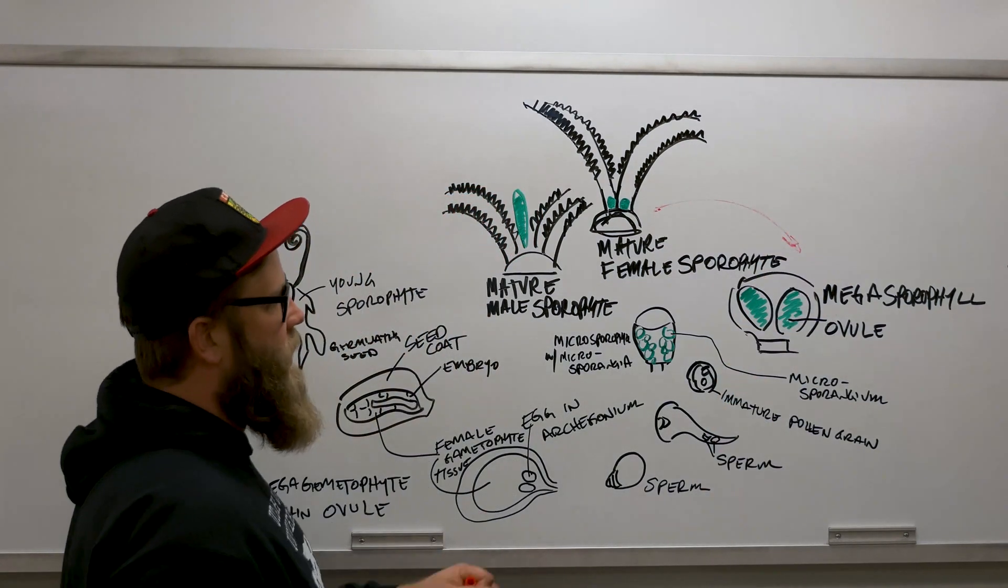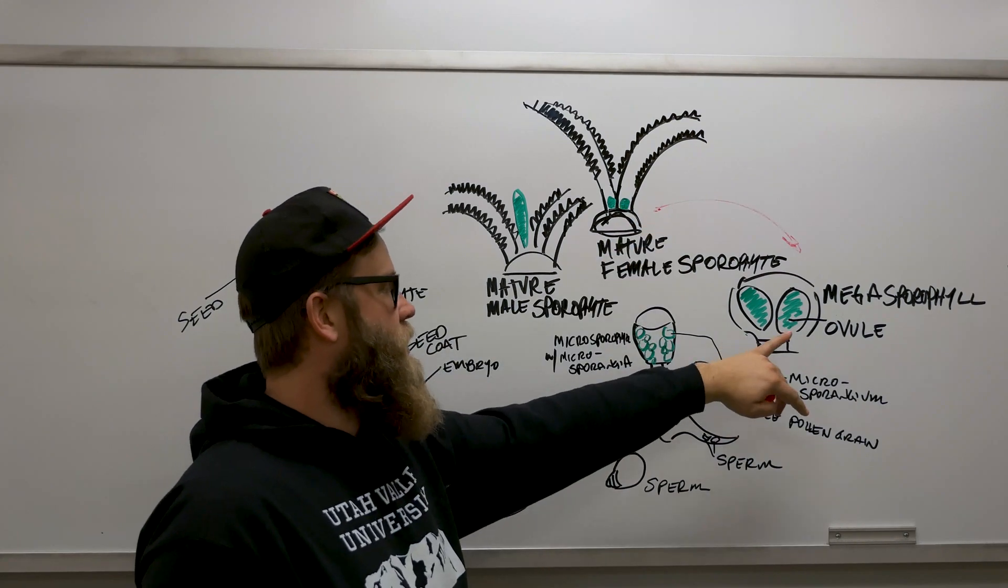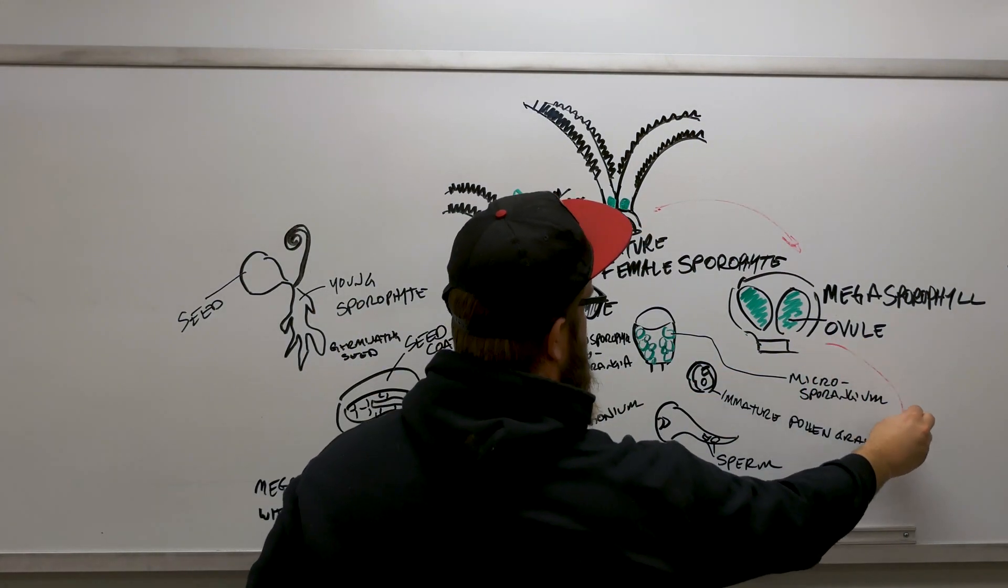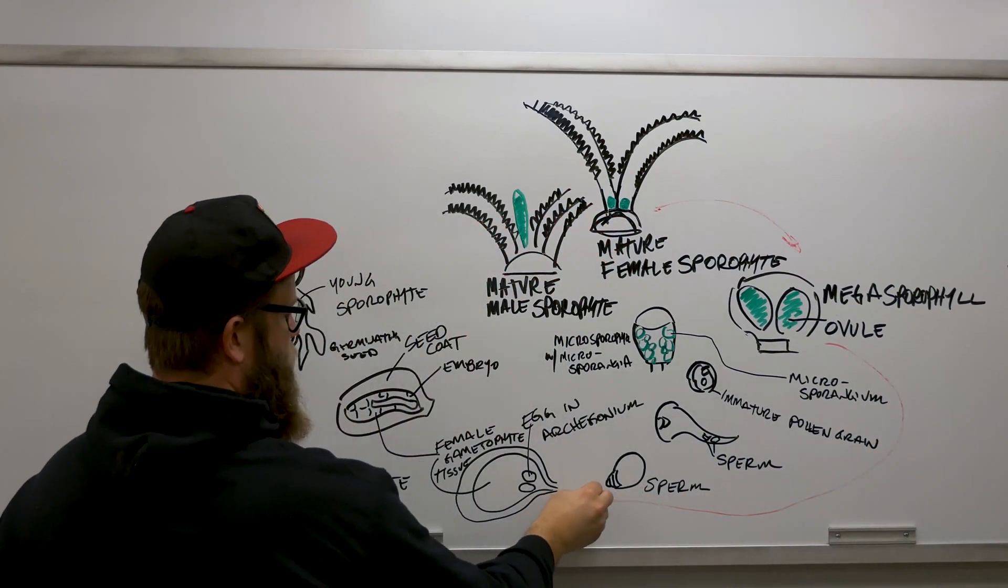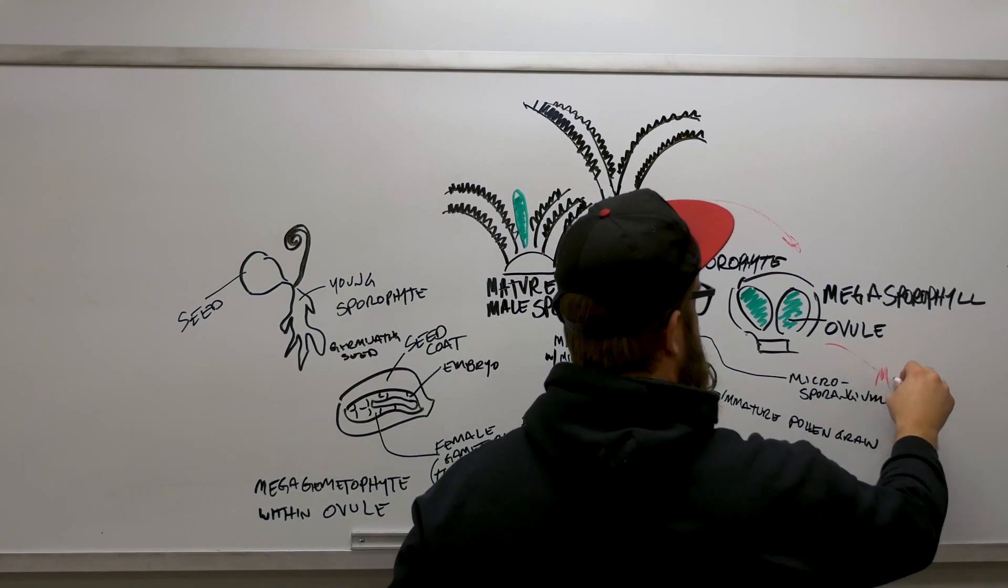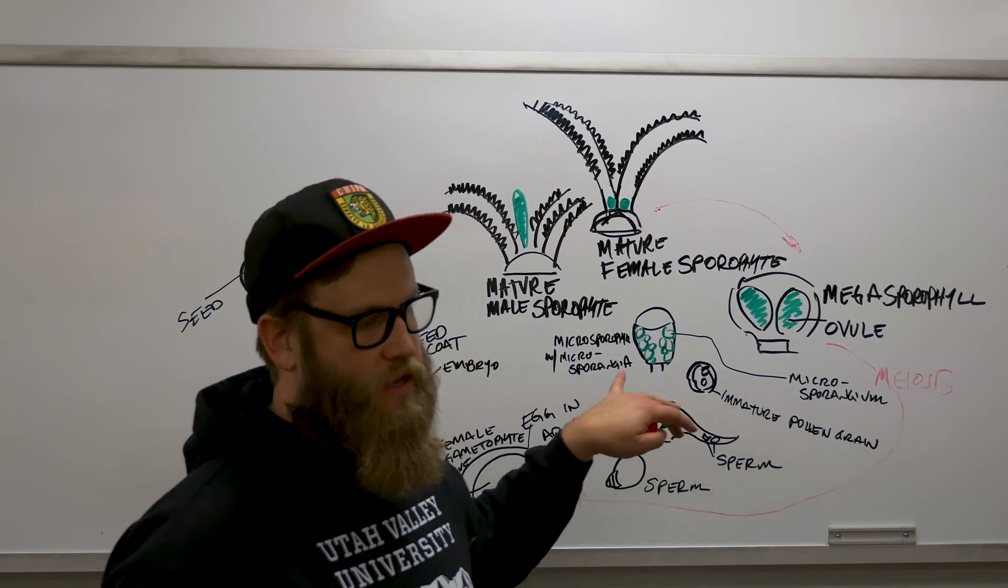Zooming in here, we've got the megasporophyll, which are these structures, and inside those are an ovule. We're going to catch up back with this right here, but it's in this place where we've got meiosis occurring right here.